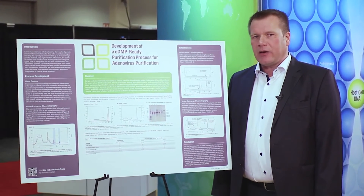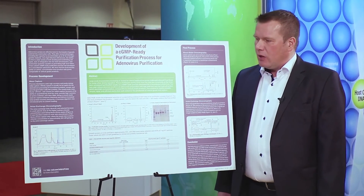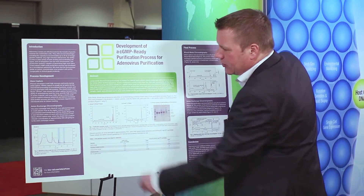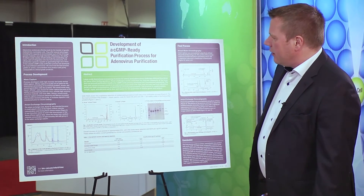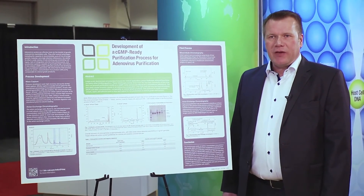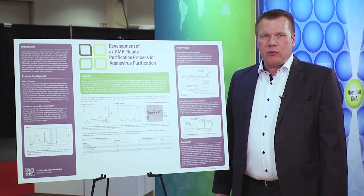What you can see in the picture on the left is the second step of the purification. The eluate from Nuvia C Prime in this process has a sodium chloride concentration of 500 millimolar, and in this way only the Nuvia Q was capable of handling that conductivity and binding the virus.